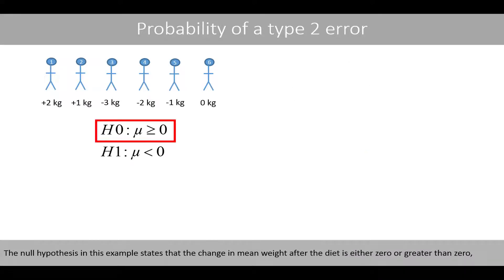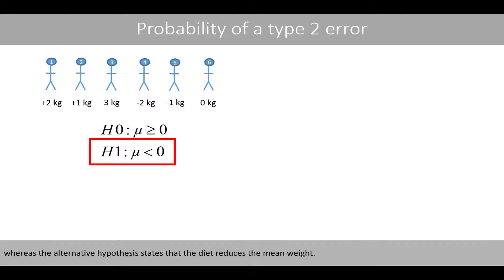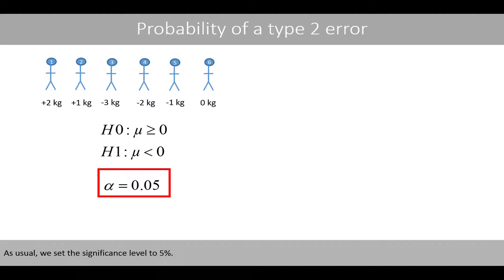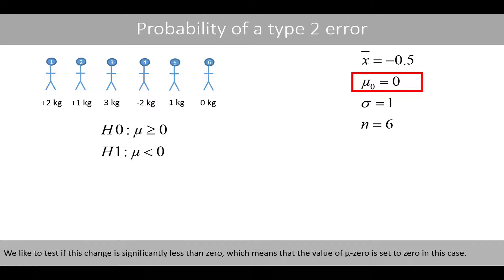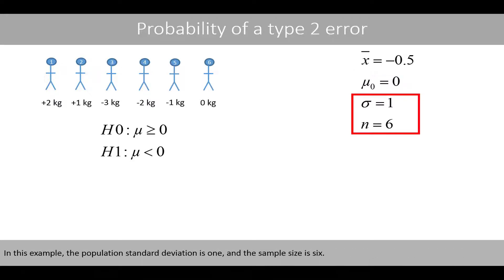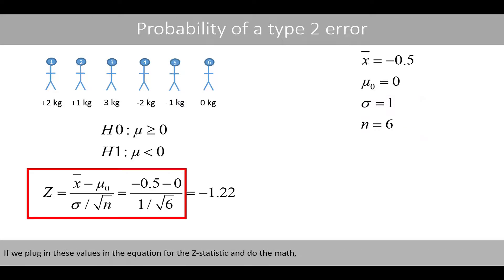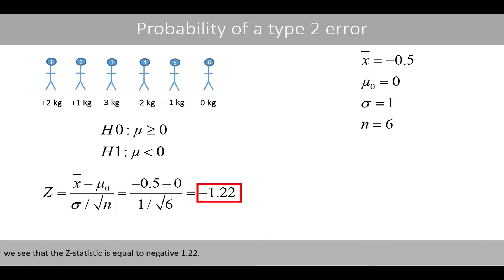The null hypothesis in this example states that the change in mean weight after the diet is either 0 or greater than 0, whereas the alternative hypothesis states that the diet reduces the mean weight. As usual, we set the significance level to 5%. The average change in weight for the six individuals after the diet is negative 0.5, which means they have lost on average 0.5 kilos. We like to test if this change is significantly less than 0, which means that the value of mu0 is set to 0. In this example, the population standard deviation is 1 and the sample size is 6. If we plug in these values in the equation for the z-statistic and do the math, we see that the z-statistic is equal to negative 1.22.